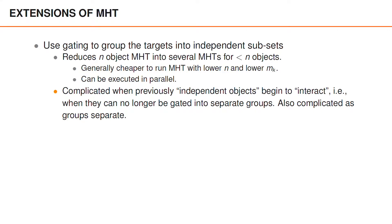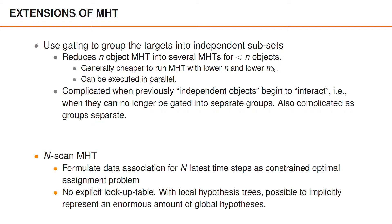However, doing this can become a bit complicated when previously independent objects — that is, objects that belong to different groups — begin to interact. In other words, when they no longer can be gated into separate groups. It can also be complicated dealing with groups that begin to separate into different groups, because this could require splitting the MHT into different parts. Another extension of MHT is called n-scan MHT.